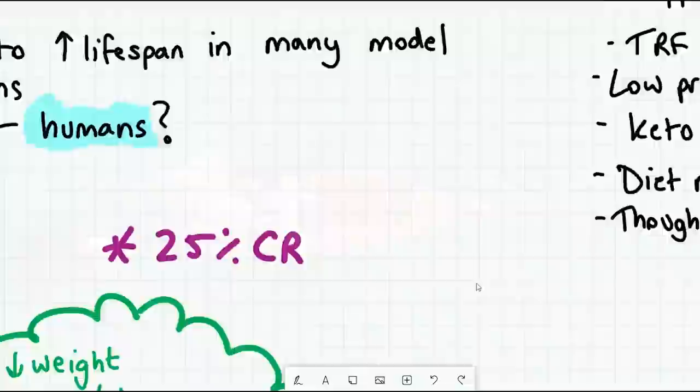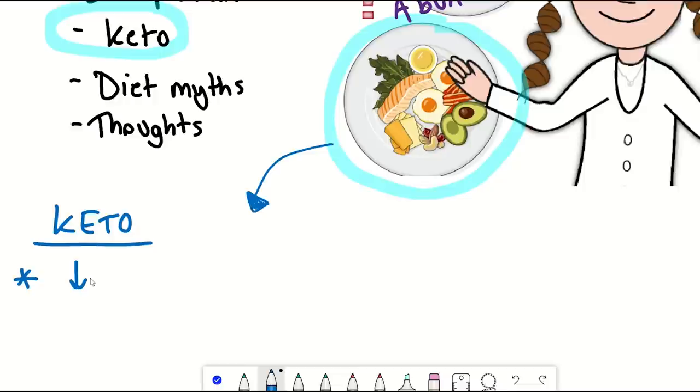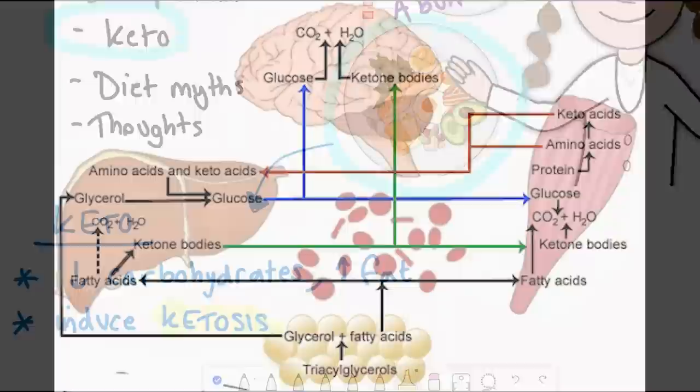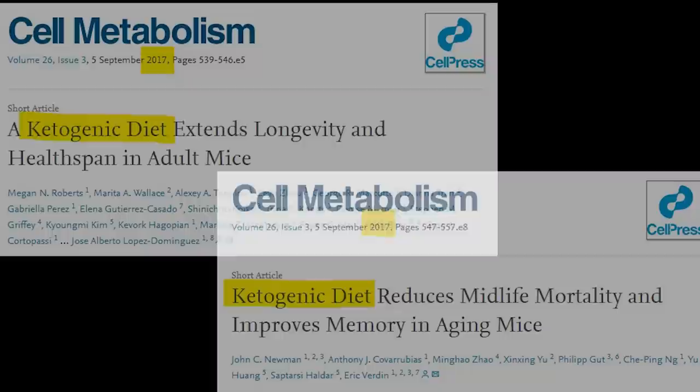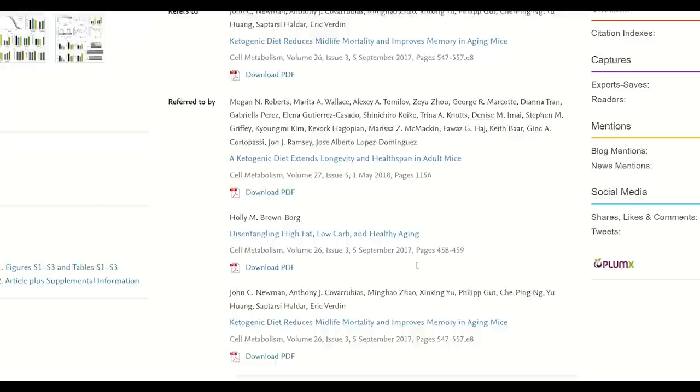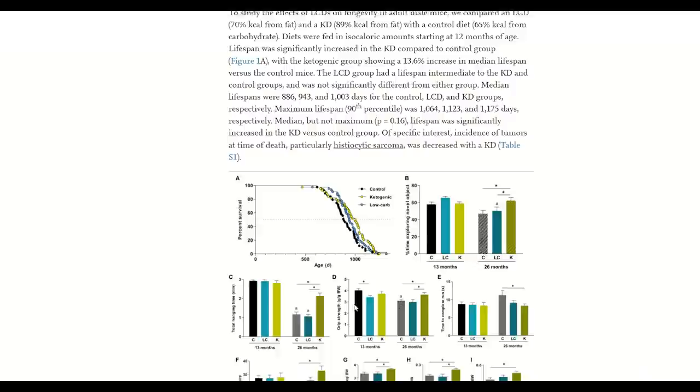So next up are keto diets. These diets involve a restriction in carbohydrates and are higher in fats to induce ketosis. Simply put, this is when you don't burn carbohydrates to generate energy, but instead break down fats into ketones and use them as an energy source. Support for this diet and anti-aging comes from two 2017 papers you can see here. This second paper had mice either in a 12% carbohydrate diet or a 1% carbohydrate diet from 12 months of age. In both, there was an increase in median lifespan along with improvements in memory and motor function.